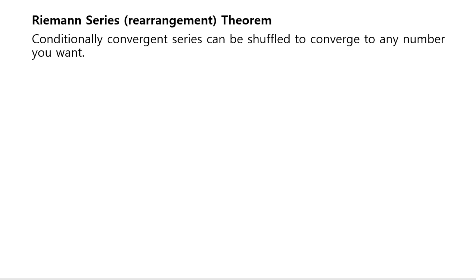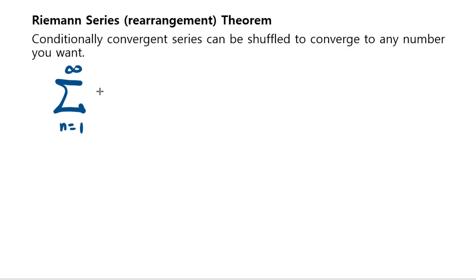For those of you who don't know what conditionally convergent series means, let me talk about one example and this example should explain everything. Think about this example: the sum from n equals 1 through infinity of negative 1 to the n plus 1, times 1 over n.